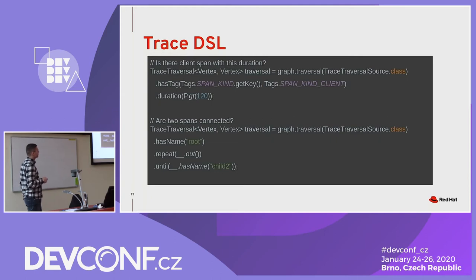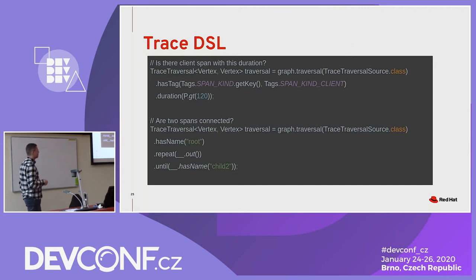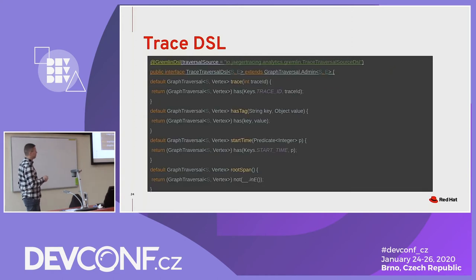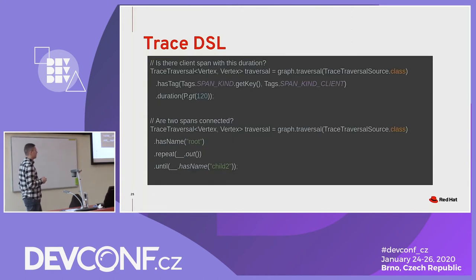The other example is: are two spans connected? You provide the name of the span and then use the Gremlin API to repeat traversal with outgoing edges until there is a vertex with a property like 'child.' It also makes sense to wrap this into a utility method — for example, 'is this span with this operation name a parent of this one?' — which just returns the traversal.